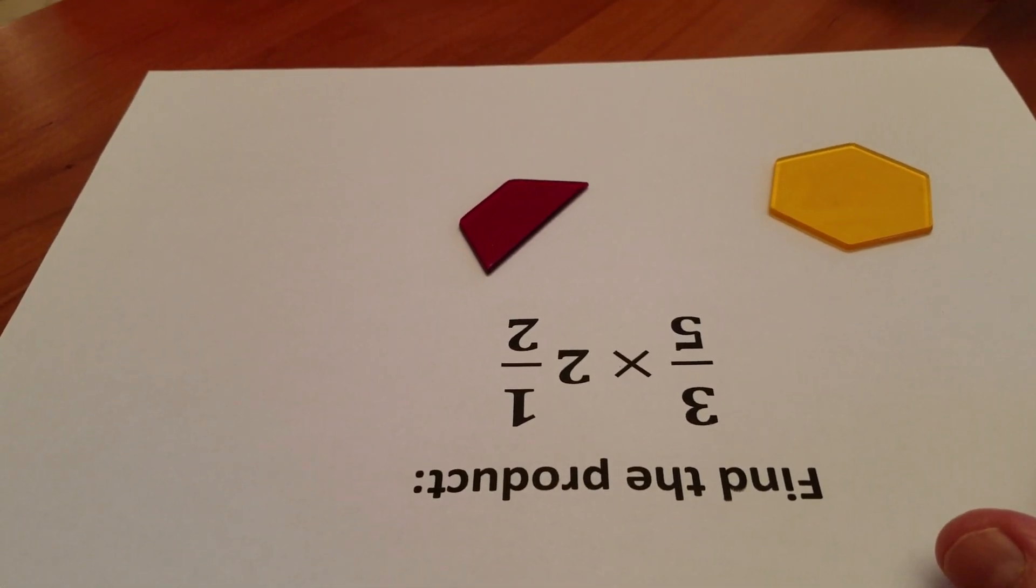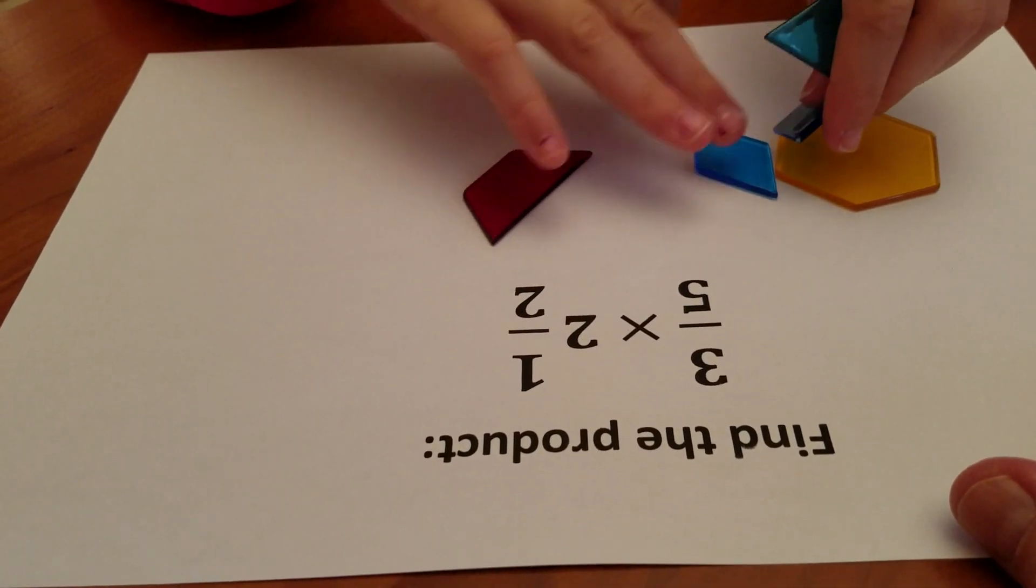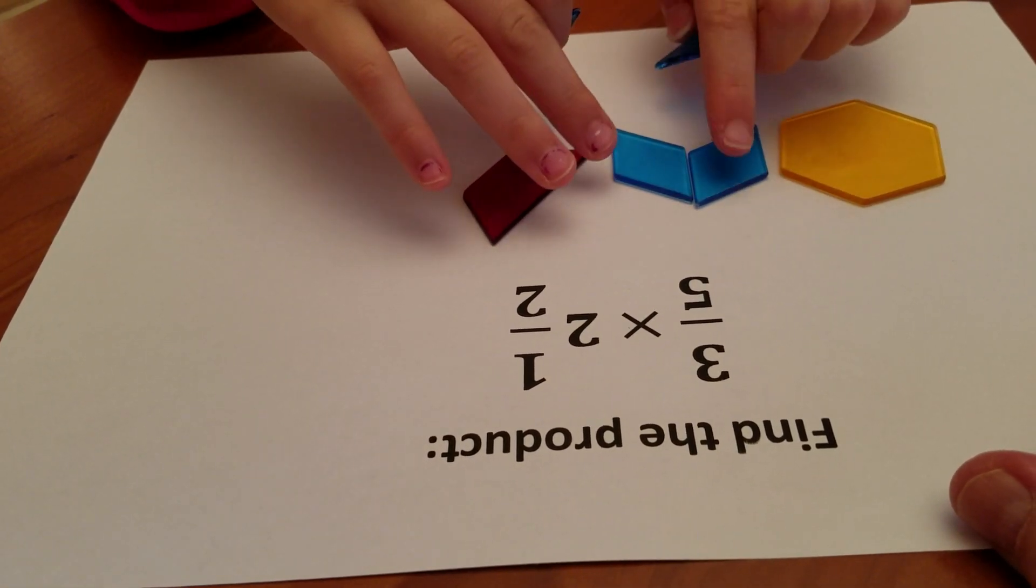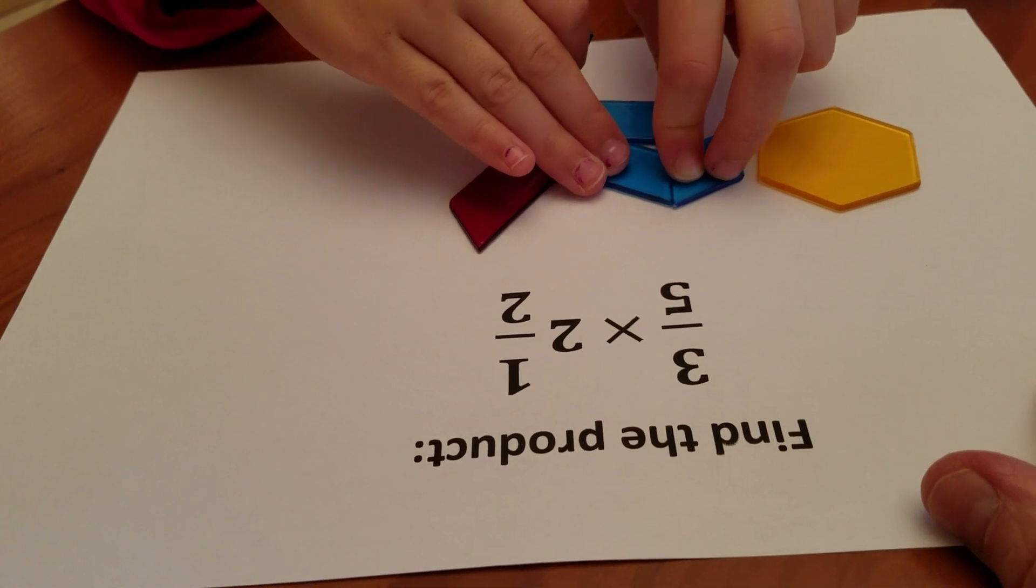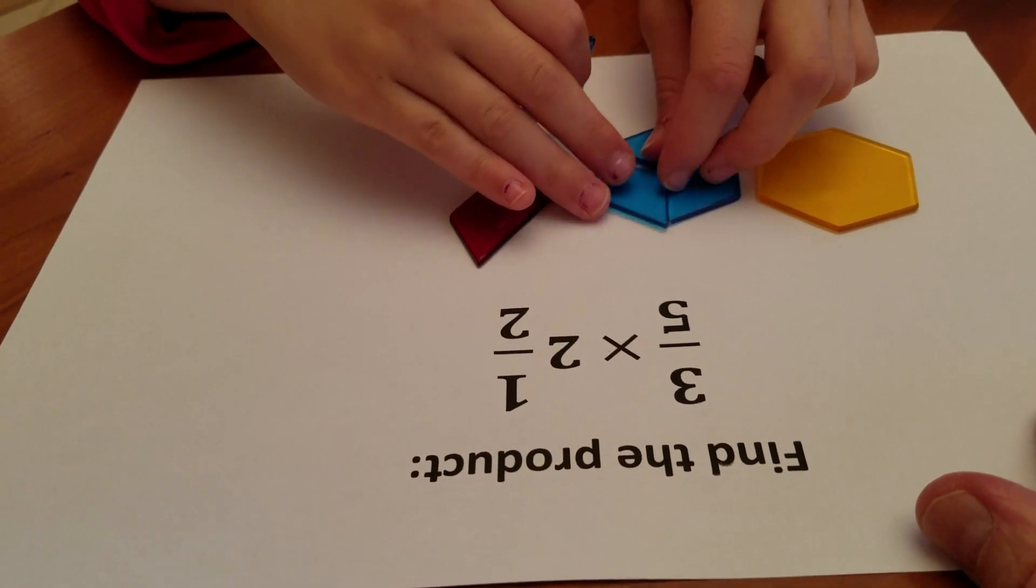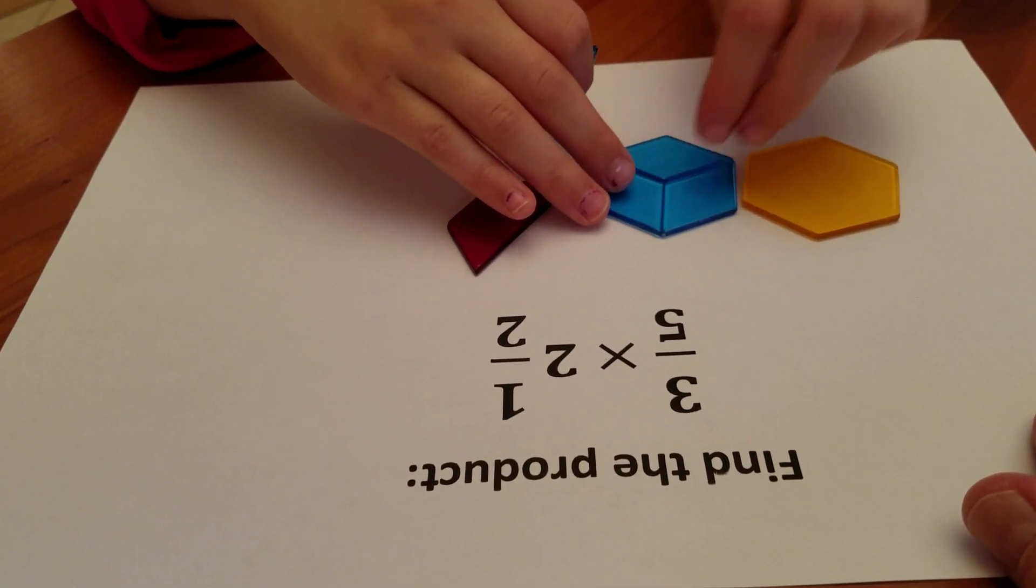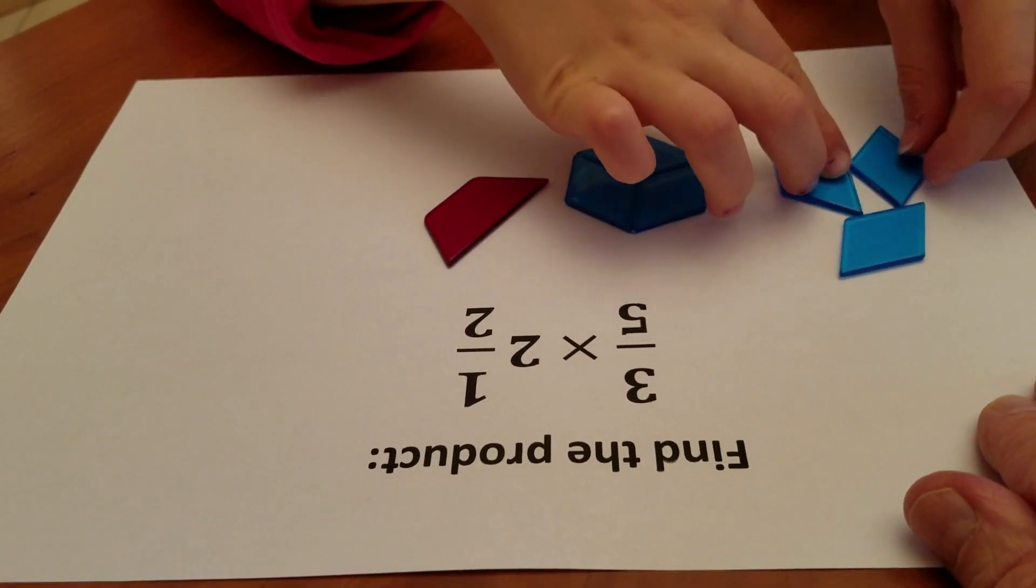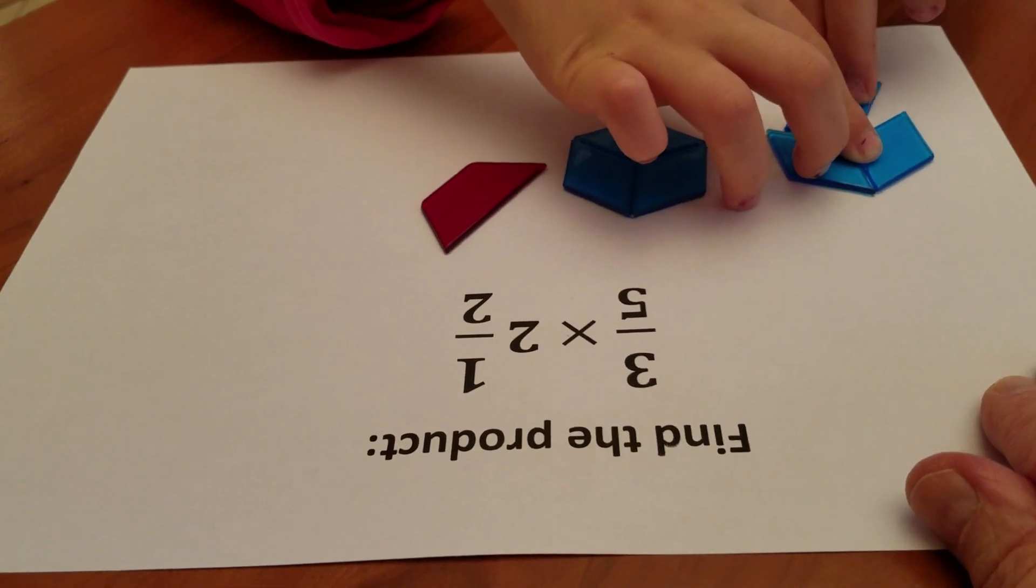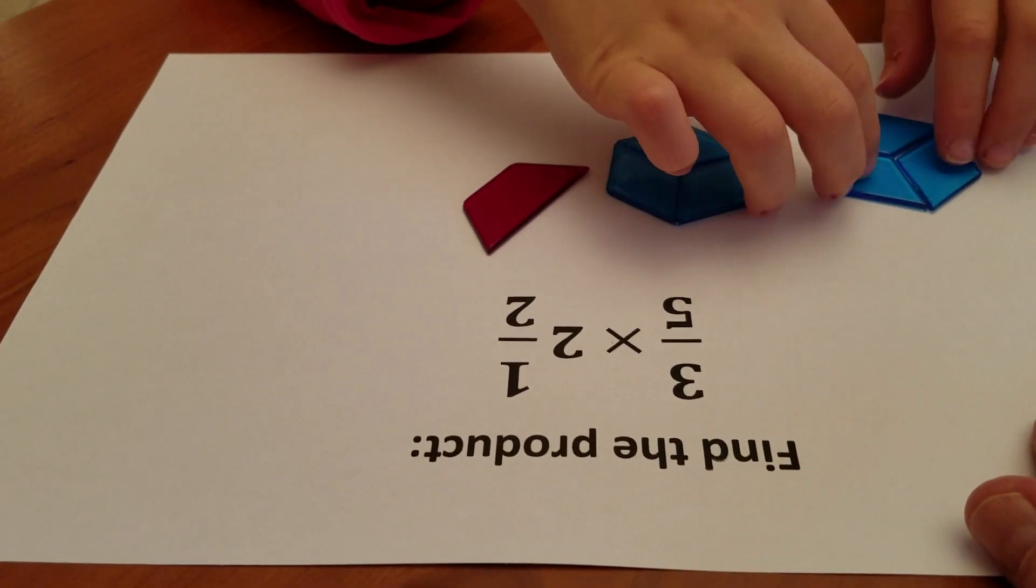Break that up into five equal parts. Okay, so you made an exchange. Now are you able to break all of this up into five equal parts?